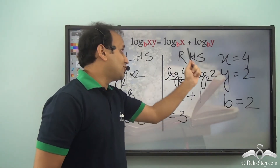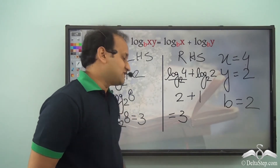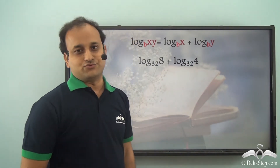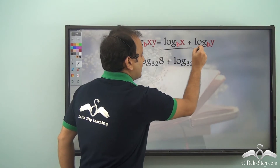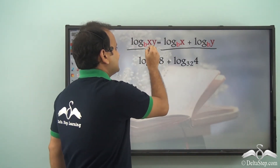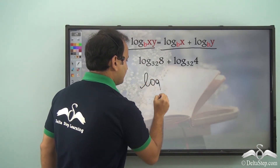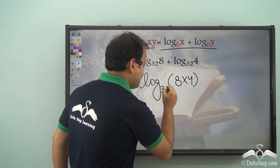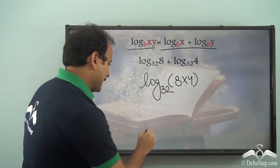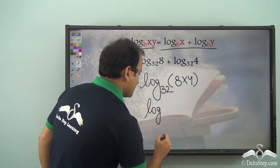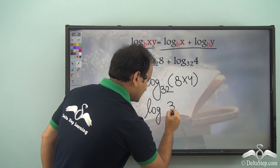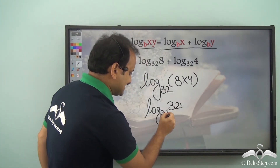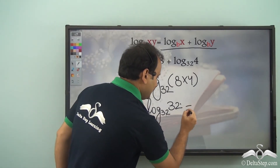Now that Sam has confirmed the law, he applies it to his problem: log 8 to the base 32 + log 4 to the base 32. Using the product law, this becomes log(8 × 4) to the base 32 = log 32 to the base 32. Since the argument and base are the same, the answer is 1.